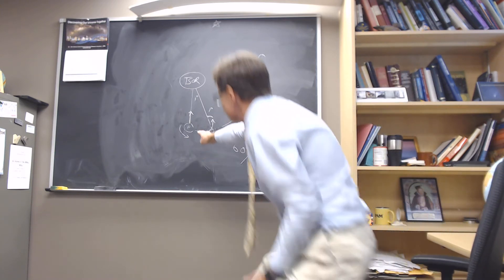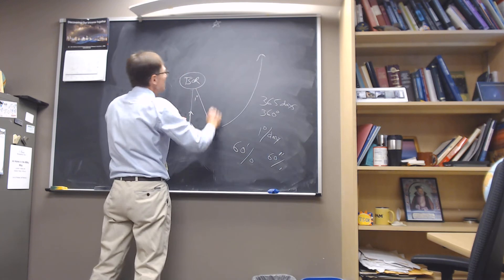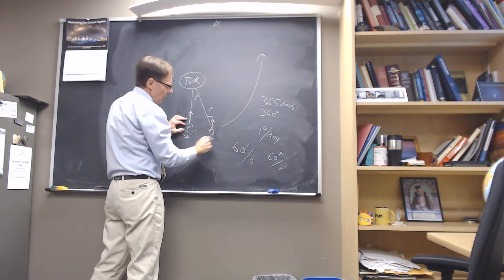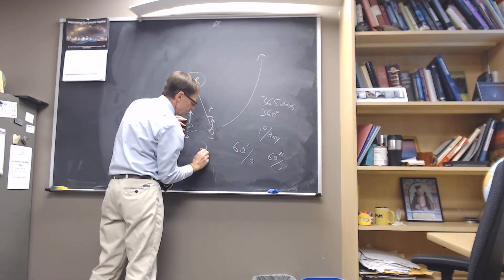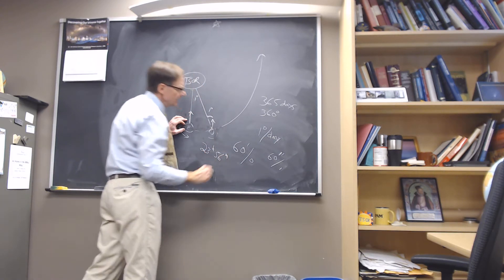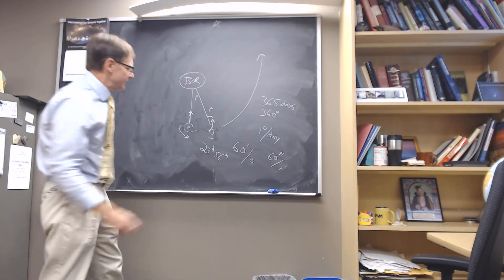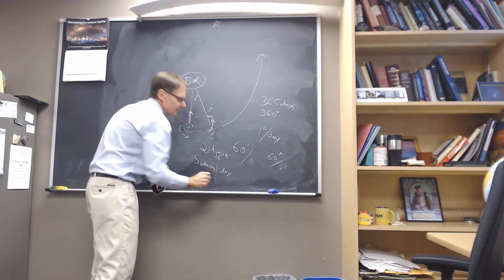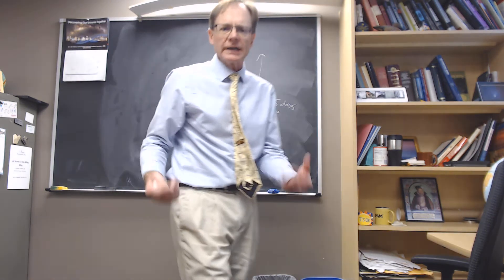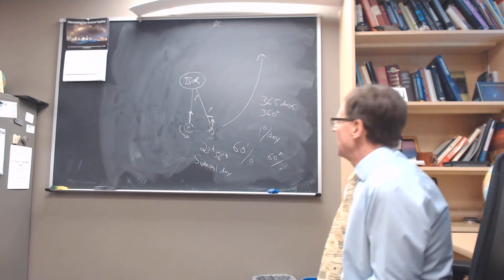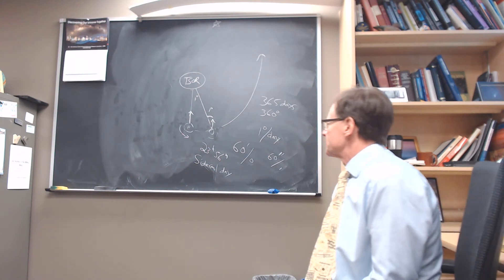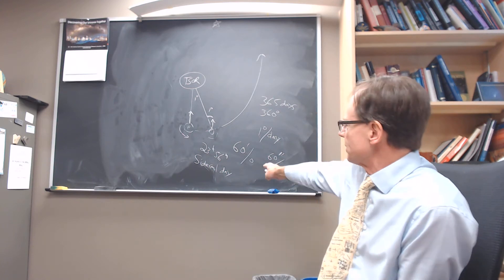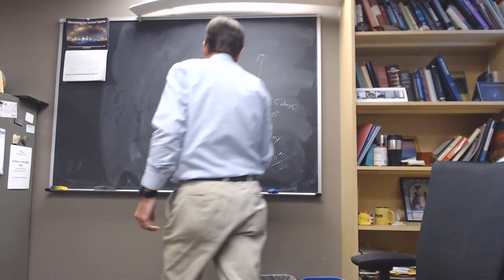As we go from here to here, the star we were looking at gets back to the same spot in the sky in one rotation. That one rotation takes about 23 hours and 56 minutes. That's what we call the sidereal day — 23 hours and 56 minutes — that's how long it takes a star to get back to the same spot. The sidereal day will always be equal to the rotation period, whether you're looking at Mars, Jupiter, or any other object.